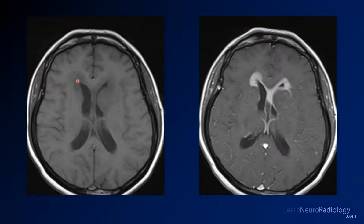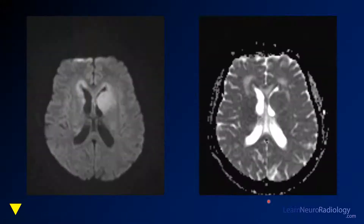Coming higher, you'll see confluent enhancement around the margin of the ventricles. Interestingly, the mass in the left basal ganglia is not enhancing very much, but most of this tumor is enhancing very avidly. On diffusion, those areas are very bright on DWI and somewhat dark on ADC, suggesting very tightly packed cellular material.